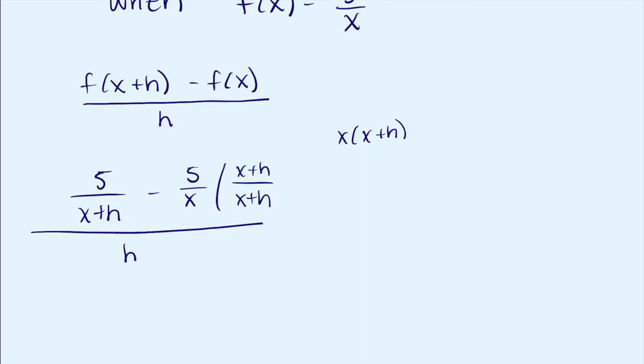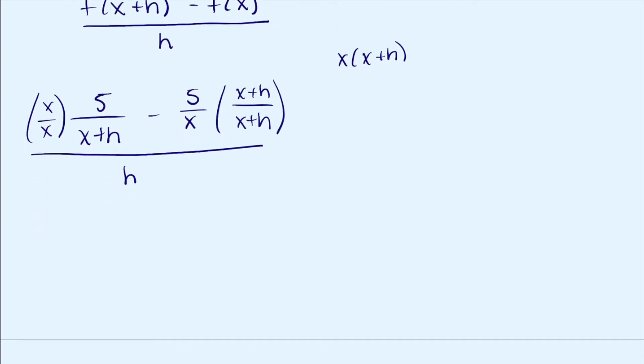That's just one, so we're not changing anything. This side gets x over x. So 5x over x times x plus h.